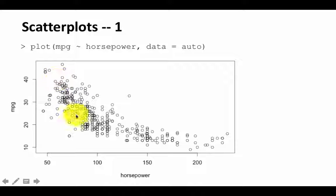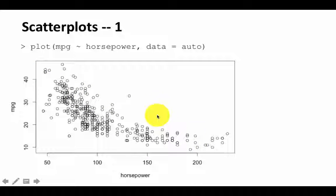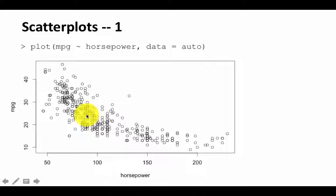So from this, it's pretty clear that as horsepower increases, the miles per gallon is tending to go down. And this trend is not linear, because if it were linear, then these points would look sort of distributed along a straight line. But here you see that there is a clear quadratic curve — the drop is not as severe at the higher ranges of horsepower than the lower ranges.